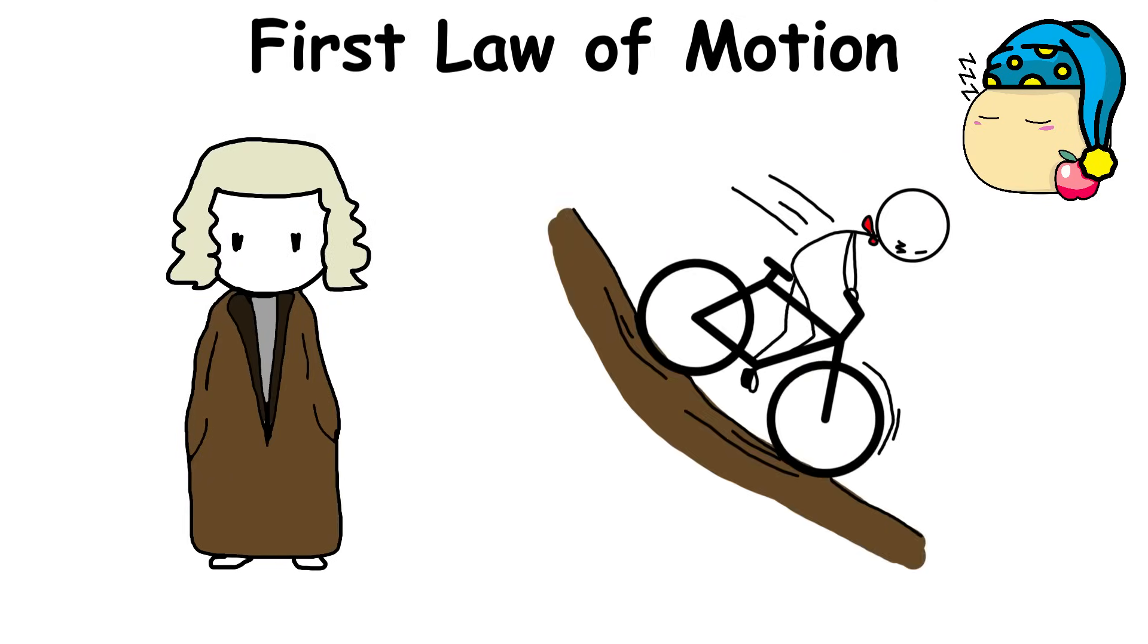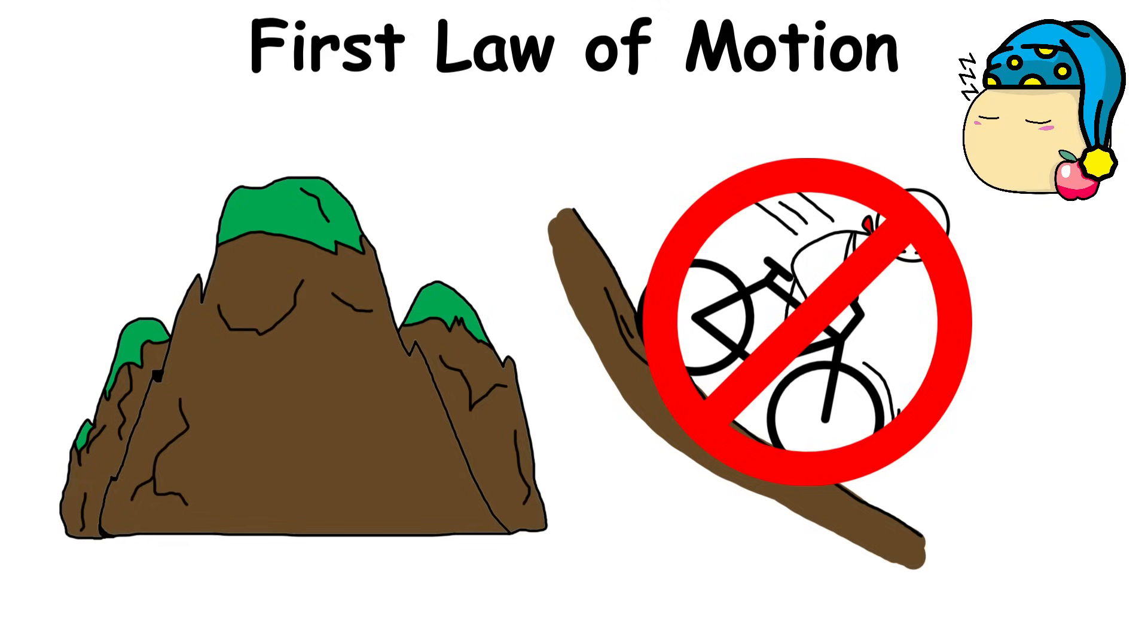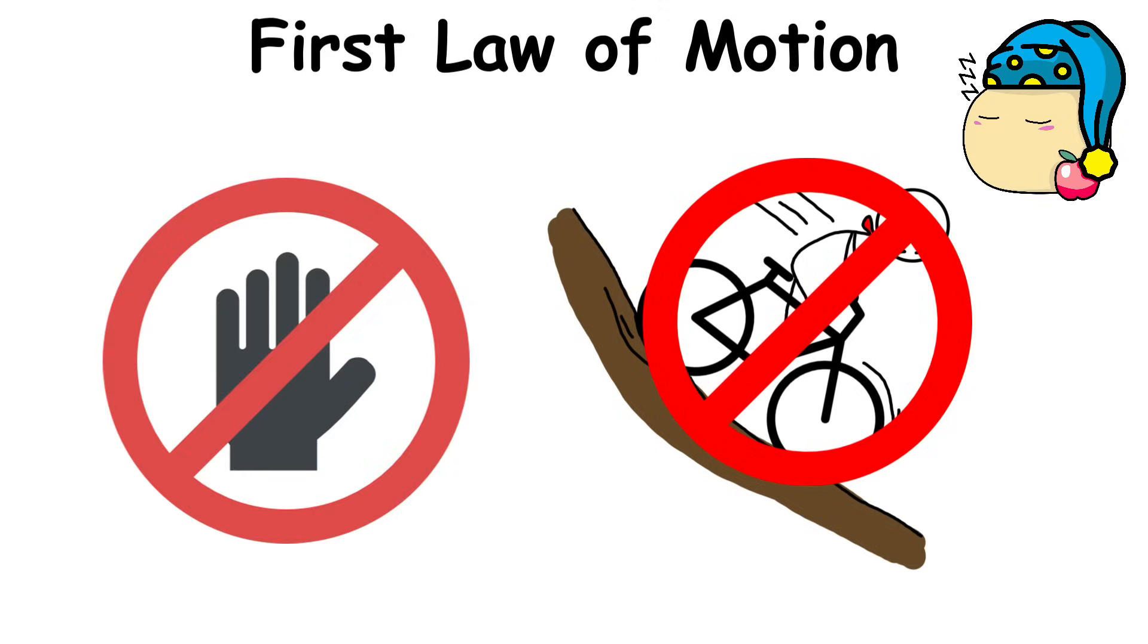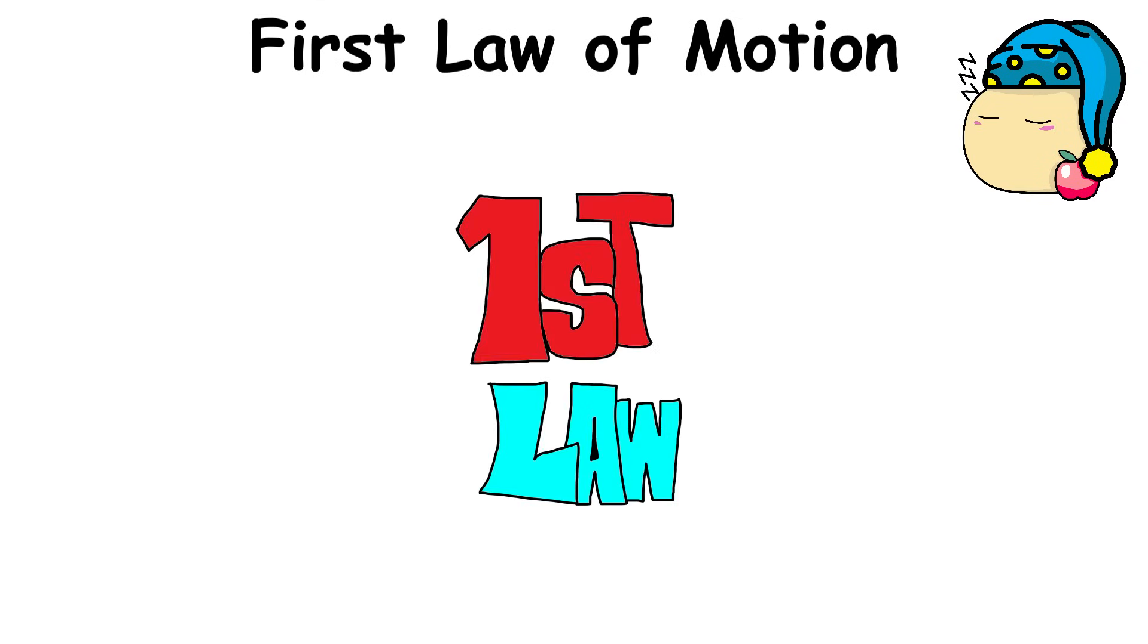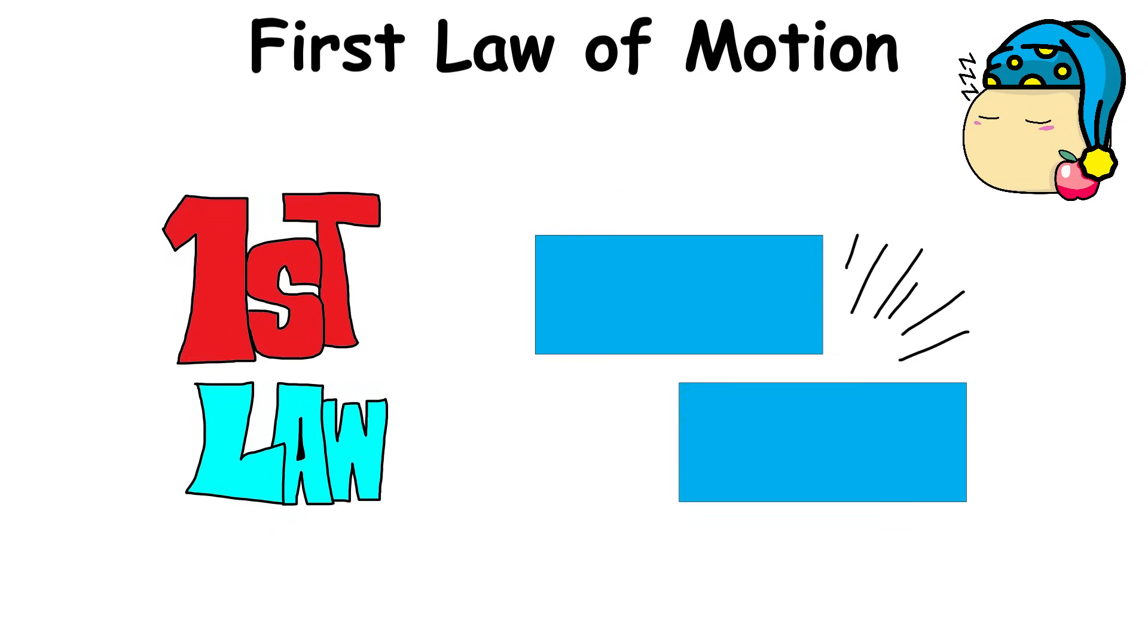Newton's First Law implies that a bike rolling down a hill will never stop moving unless something stops it. That doesn't happen on Earth, even if it doesn't hit anything or if someone doesn't hit the brakes. That's because the First Law is only valid in a frictionless environment.